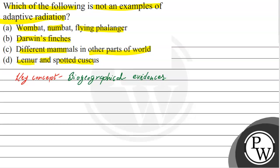For adaptive radiation, which is not an example? Option A gives us wombat, numbat, and flying phalanger. These are marsupial mammals - all three are marsupial mammals.